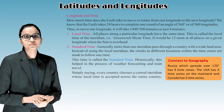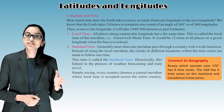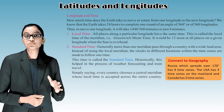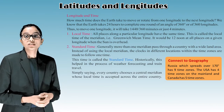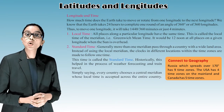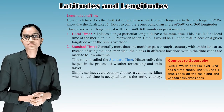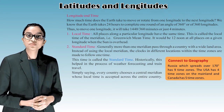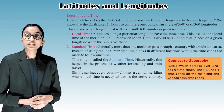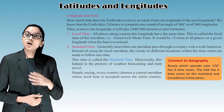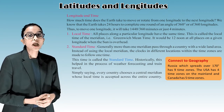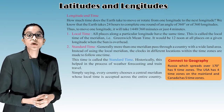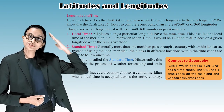Local time: All places along a particular longitude have the same time. This is called the local time of the meridian. Greenwich Mean Time: It would be 12 noon at all places on a given longitude when the sun is overhead.